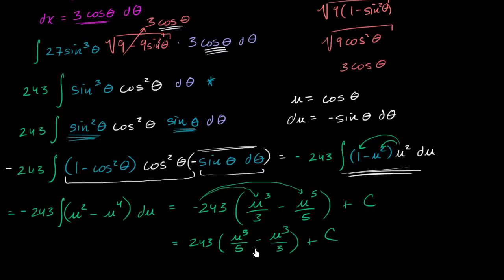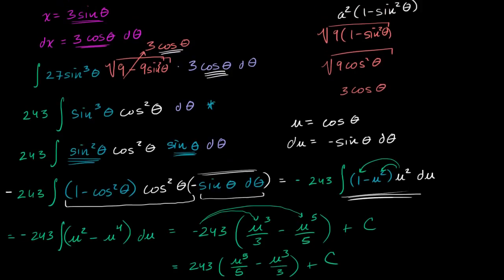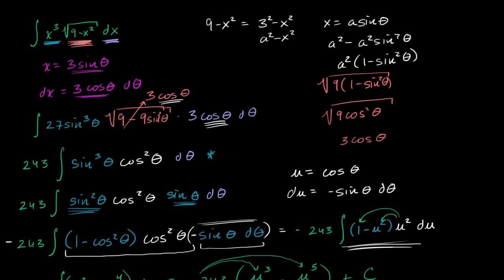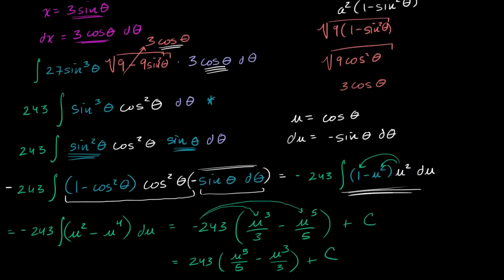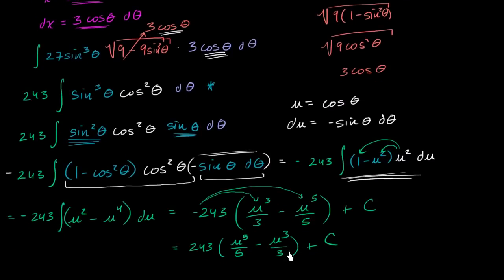You might say we're finally done, but we aren't. We have everything in terms of u, while our original integral was in terms of x. In the next video, we're going to unwind all this substitution and write the expression in terms of x — going from u to theta to x, since we've done two rounds of substitutions.